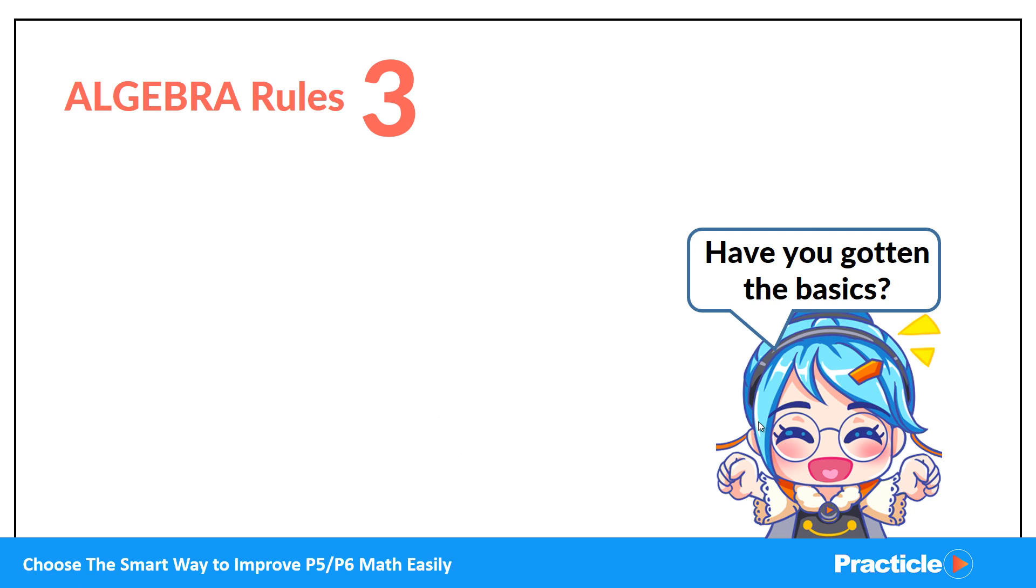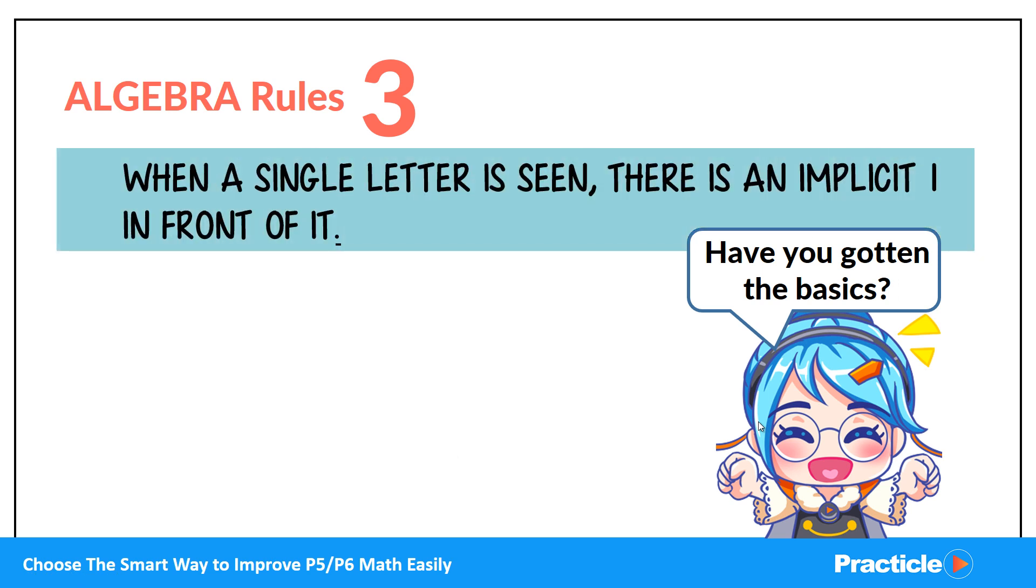When a single letter is seen, there is an implicit one in front of it. So the meaning of implicit is something like it's not said but it's understood. Since any number multiplied by 1 will result in the number itself, we will usually leave out the 1 when we are writing it. So therefore, when we see a single letter without any number in front, for example X over here, we can interpret it as 1 multiplied by X.